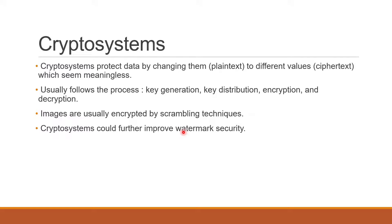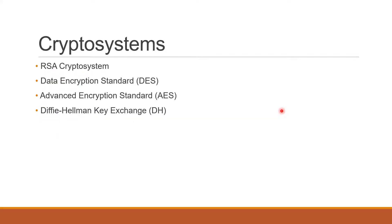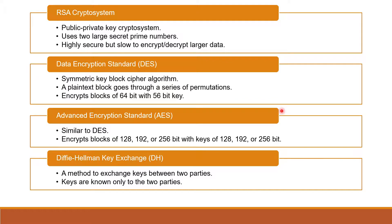Next is cryptosystems. Cryptosystems protect data by changing them to different values which seem meaningless. The process follows key generation, key distribution, encryption, and decryption in that order. Images are usually encrypted using scrambling techniques; however, we can further improve the security by applying cryptosystems. These are the four cryptosystems applied by researchers in robust and imperceptible watermarking. First is the RSA cryptosystem — a public-private key cryptosystem that uses two large secret prime numbers. It is highly secure, but when dealing with larger data, it is inefficient.